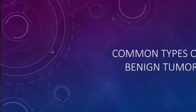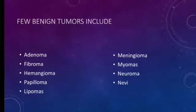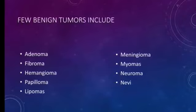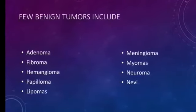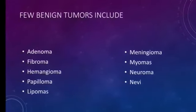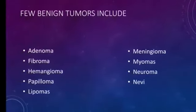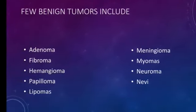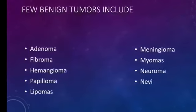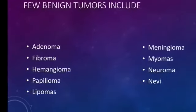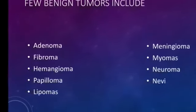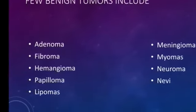Today's class is about common types of benign tumours. Common types of benign tumours include Adenoma, Fibroma, Hemangioma, Papilloma, Lipomas, Meningioma, Myomas, Neuroma, Naevi, etc.